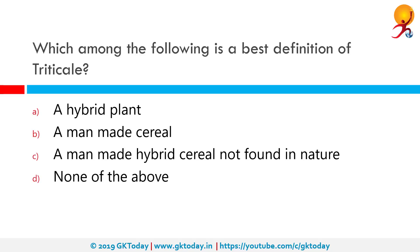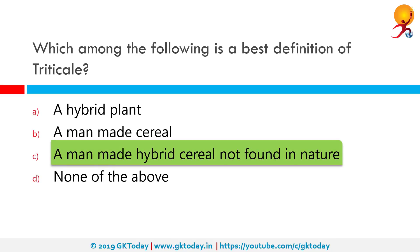Which among the following is the best definition of triticale? The correct answer is a man-made hybrid cereal not found in nature. Triticale is a hybrid of wheat and rye first bred in laboratories during the late 19th century in Scotland, England and Germany. Commercially available triticale is almost always a second-generation hybrid, that is a cross between two kinds of primary triticales.